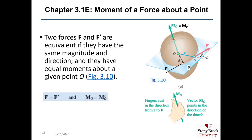Two forces F and F' are equivalent if they have the same magnitude and direction and have equal moments about a given point O. Force F' acting on the same line of action as F but at a different position is still equivalent to F, because multiplying either magnitude by the perpendicular distance d gives the same moment about O.